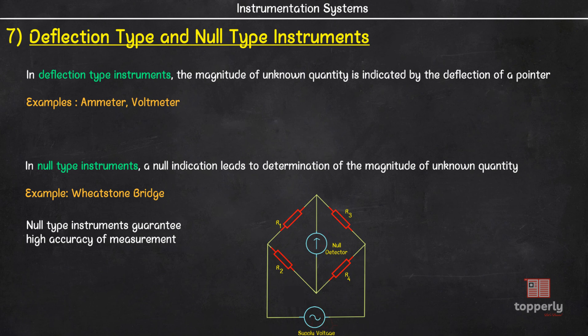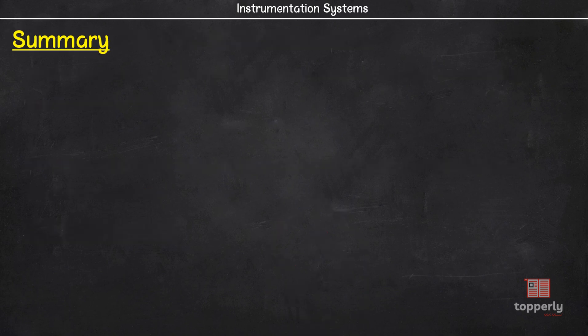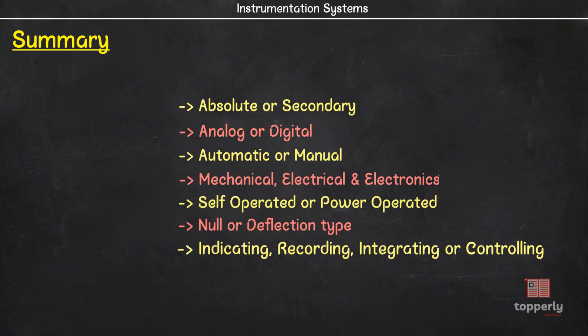That's all for this lecture. To summarize, we studied about seven ways to classify the instruments. That is absolute or secondary, analog or digital, automatic or manual, mechanical, electrical or electronic, self operated or power operated, null or deflection type and finally indicating, recording, integrating or controlling type instruments.